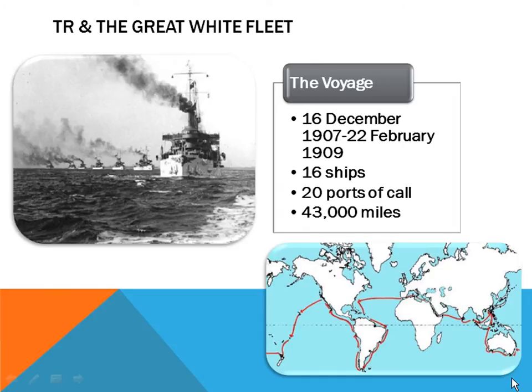One of Theodore Roosevelt's greatest legacies was elevating the United States as a world power, through the voyage of the Great White Fleet. The Great White Fleet left Hampton Roads on the Chesapeake Bay on December 16, 1907, and returned on February 22, 1909 — right before Roosevelt left office. Four squadrons totaling 16 ships sailed all the way around the globe, making 20 different ports of call — goodwill stops.